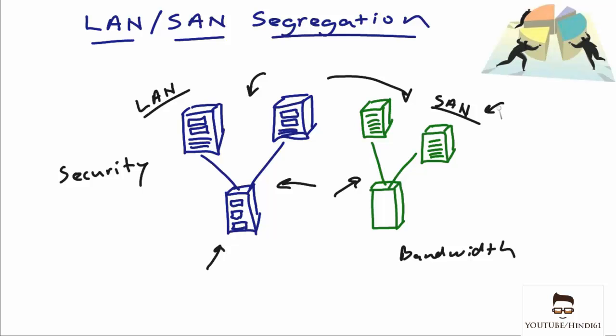We'd take our data, put it in the SAN, and give it really high bandwidth. Today, the local area network is certainly catching up with the bandwidth capabilities of the SAN, and that's definitely a consideration. Another major factor for the segregation has always been flow control.